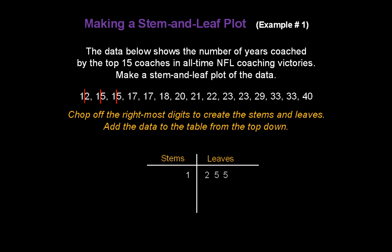17. Split it right down between the 1 and the 7. Add a 7 to the leaves. Same thing with the next 17. We already have the stem of 1, put another 7 in the leaves. And finally, for our stems of 1, this is the last number. One more 8 in the leaves.